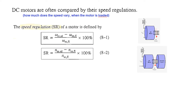The formula for speed regulation is: the angular speed at no load minus the angular speed at full load, divided by the angular speed at full load. In RPM terms, it is speed at no load minus speed at full load, divided by speed at full load, multiplied by 100%.